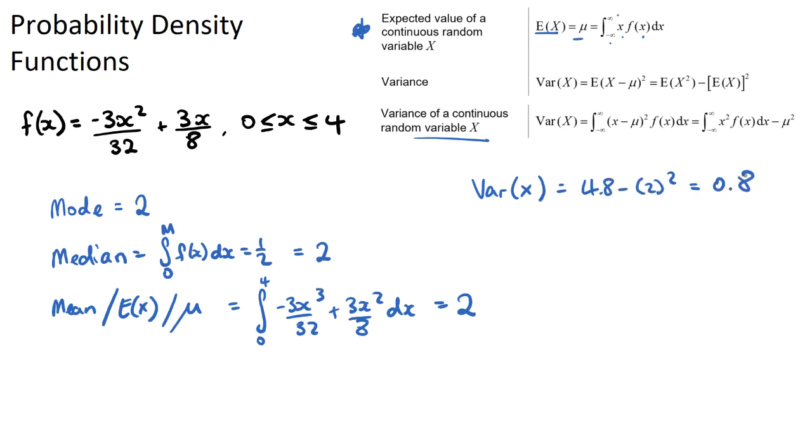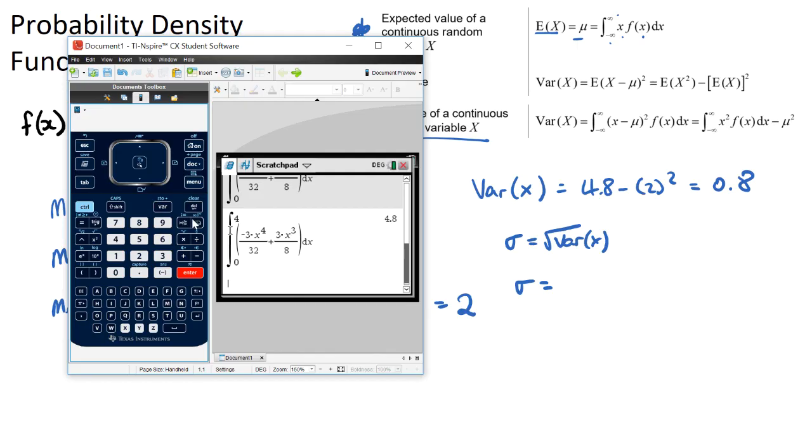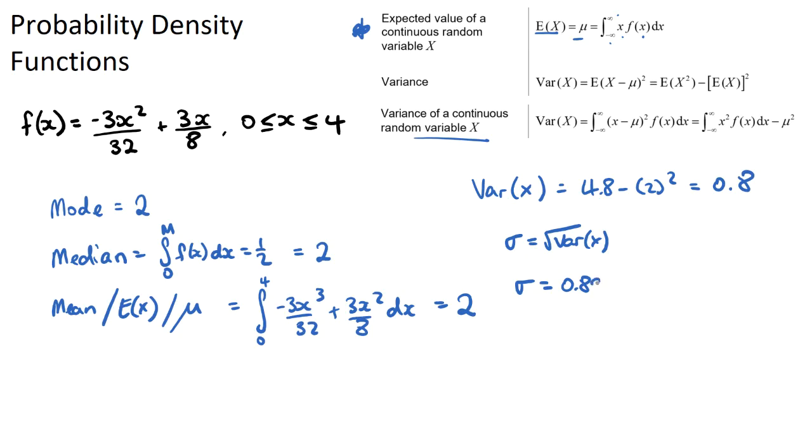And then we'll have 0.8, and we need to subtract our mean squared, so 0.8 subtract 2 squared. So this will give us 0.8. If they do ask for the standard deviation, we know the standard deviation is the square root of the variance, or we can say the variance is the standard deviation squared. So the standard deviation will be the square root of 0.8. We can take the square root of that, which will be 0.894.